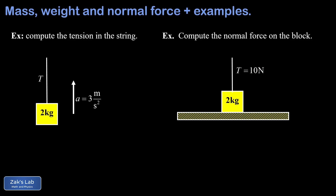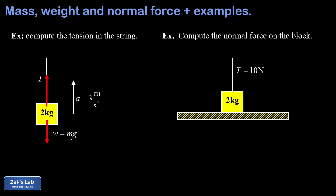Now we put our new ideas into practice with a few short examples. In our first example, we have a two kilogram block hanging from a string with tension T. The tension is pulling hard enough to cause an upward acceleration of three meters per second squared, and the goal is to compute that tension. We begin by putting force vectors into the diagram. The force of gravity pulls down on the block, given by mg. The tension in the string pulls upward, and I made the tension vector a little longer than the weight vector because the net force points upward. We could plug in m and g, but it's best to find a symbolic solution first.